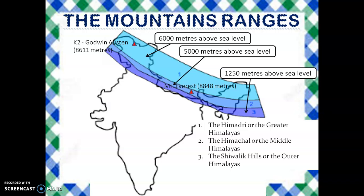Mount Everest is the highest mountain peak in the world. It is located in Nepal and its height is 8,848 meters. India's highest peak is K2, which is also the world's second highest peak — that is why it is called K2. Its other name is Godwin-Austen and its height is 8,611 meters.